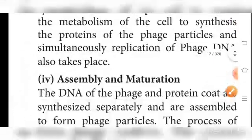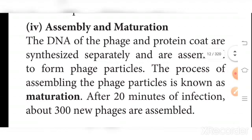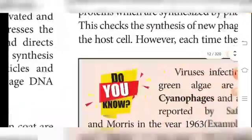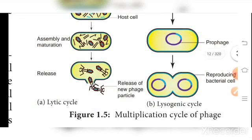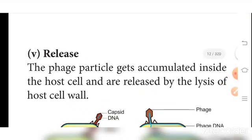The next stage is assembling and maturation. Once the components are formed — head, tail, and tail fibers — they will assemble together. In this stage, 300 to 1,000 new phage particles will be assembled inside the host cell. The phage particles get accumulated inside the host cell.